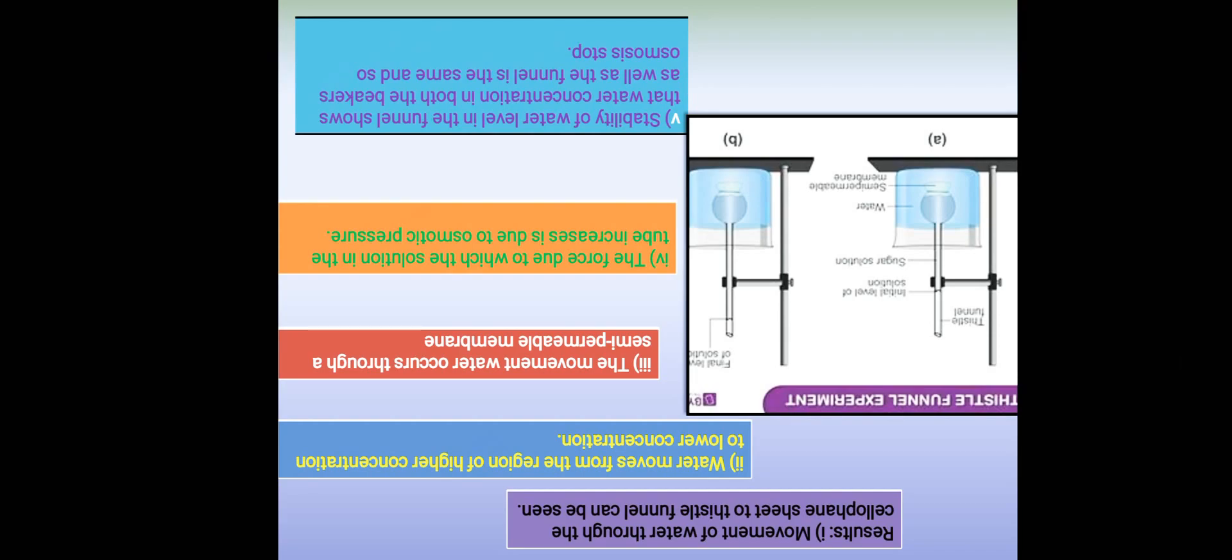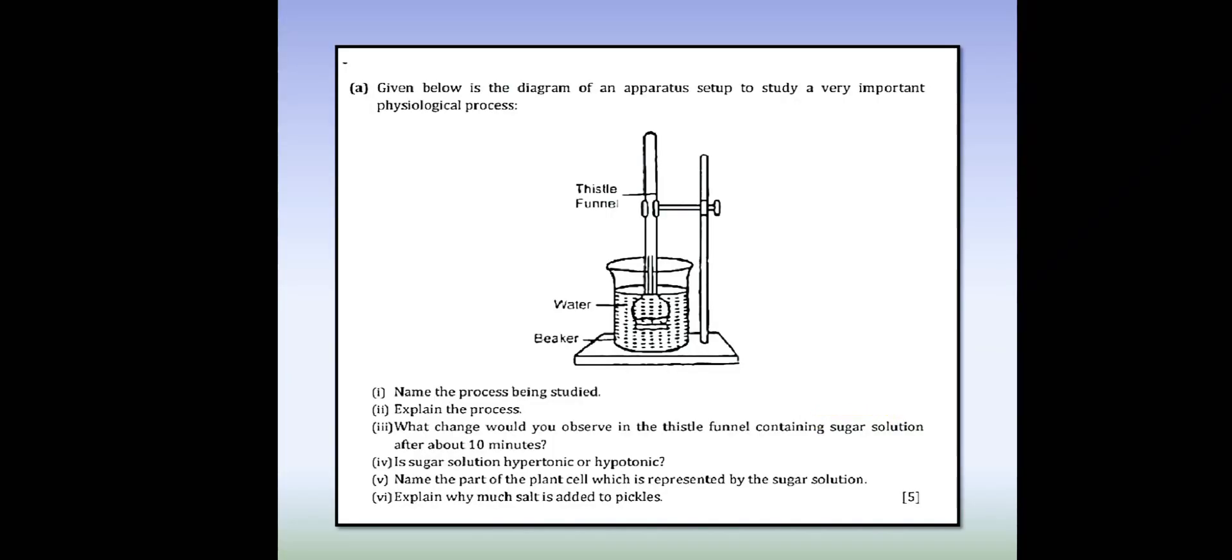So children, today's assignment: Define the following terms: imbibition, diffusion, and osmosis. Give two types of osmosis and explain the types. Given below is a diagram of an apparatus set up to study a very important physiological process.